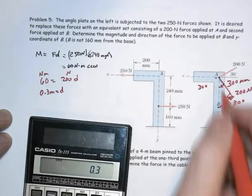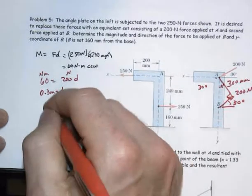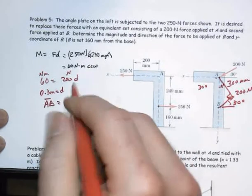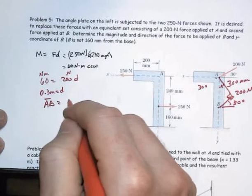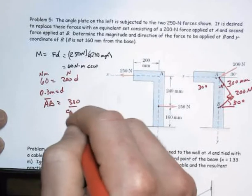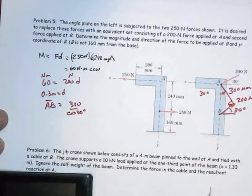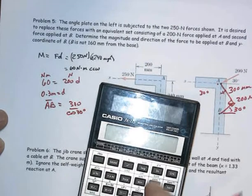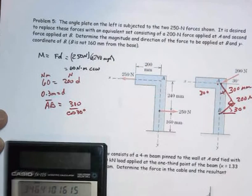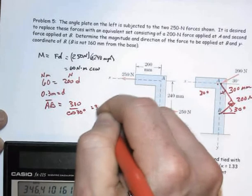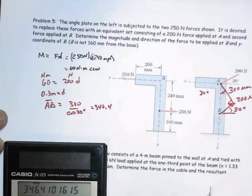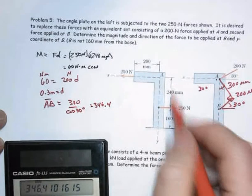So now I can get my A to B distance is going to be equal to 300 divided by cosine of 30. So we now end up with 346.4 for that distance. We have a total height of 240 plus 160 or 400.